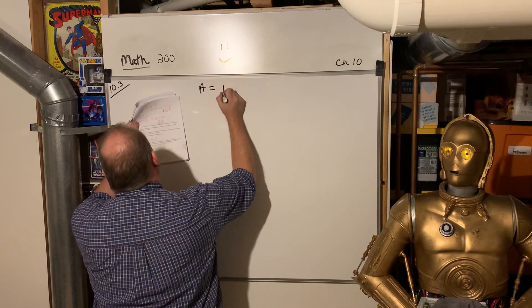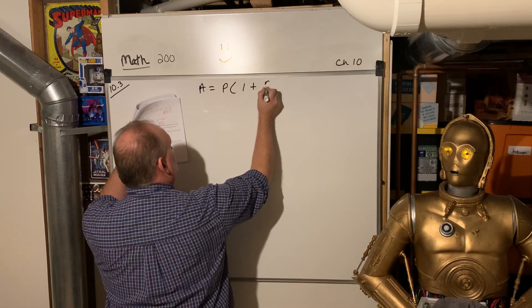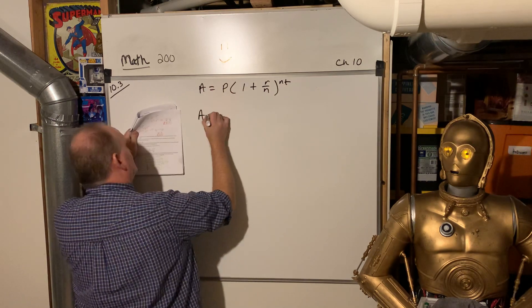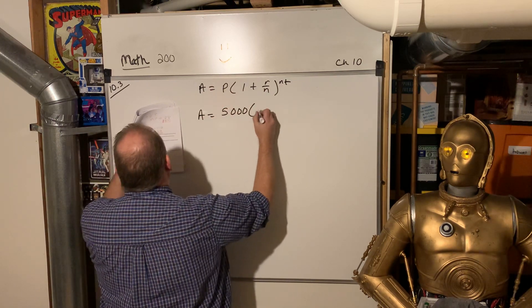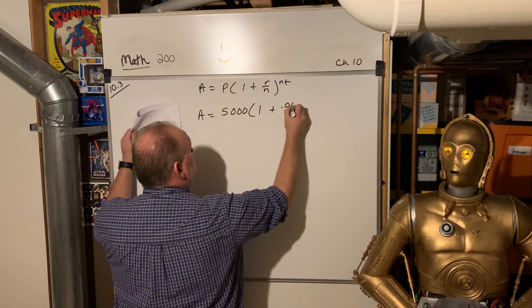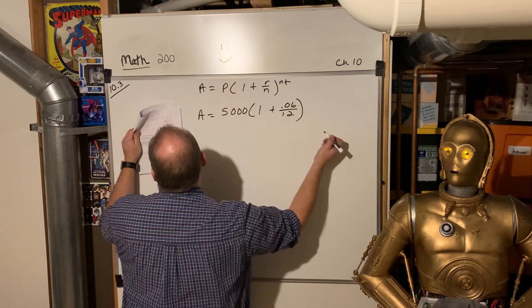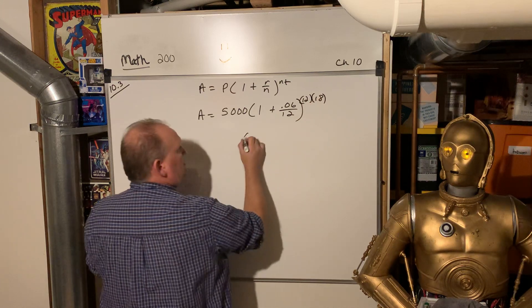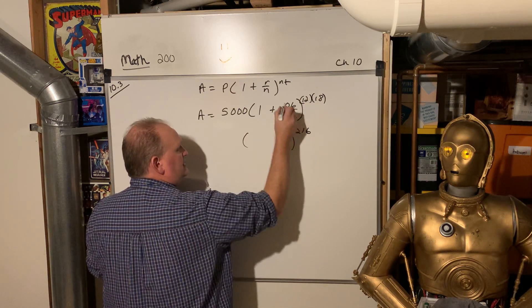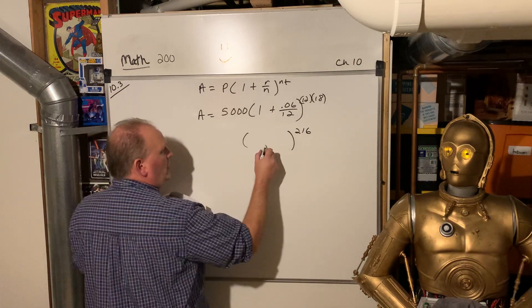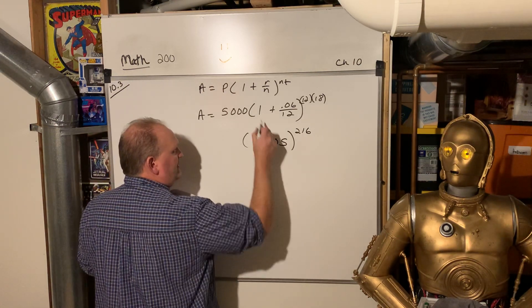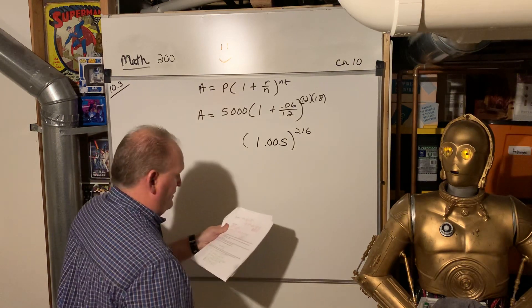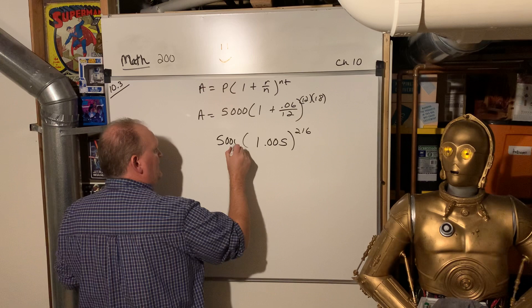We're taking one more look at that problem that we got to here. 6 over 12, 12 times 18, and we have the 216. If you take 0.06 divided by 12, that's 0.005 plus 1 is 1.005, all right, to the 216th power, and then times 5,000.